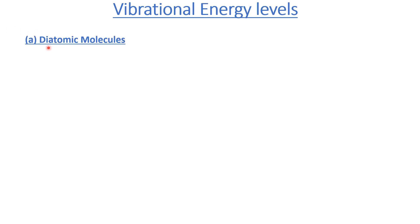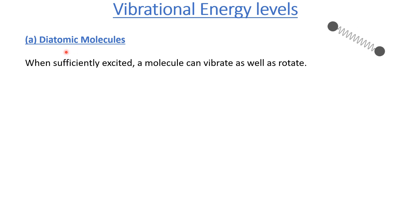Assalamu alaikum. After discussing the rotational spectra, now we are going to discuss the vibrational spectra. For vibrational spectra we have to know about the vibrational energy levels. We first consider the simple case of a diatomic molecule. A diatomic molecule, when it is sufficiently excited, can vibrate as well as rotate. The vibrational spectra is a bit complicated as compared to the rotational spectra.